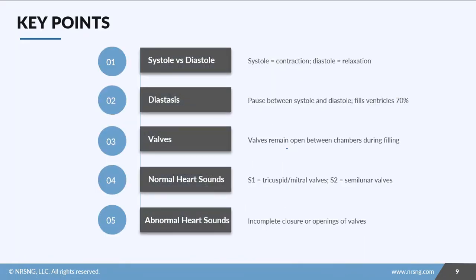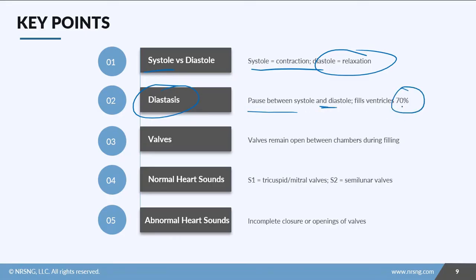Let's recap the key terms. Systole is contraction and diastole is relaxation of whatever chamber we're talking about. Don't forget diastasis — the pause between systole and diastole where the ventricles fill up to 70%. When talking about valves, think of them as doors that remain open between chambers during the filling phase. For normal heart sounds: S1 is associated with the tricuspid and mitral valves closing.